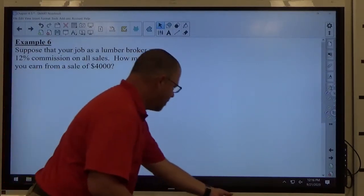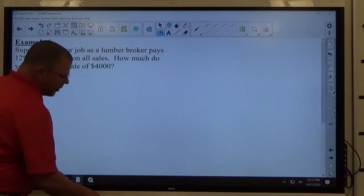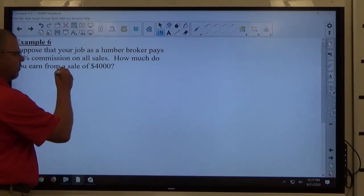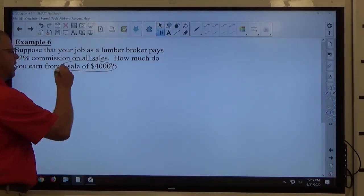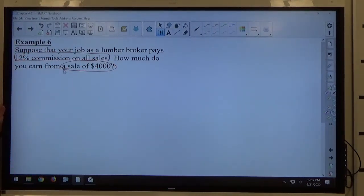So, once again, a commission has to do with you earning a portion of the amount that you sold. So if I got this job and I sell $4,000 worth of stuff and I get a 12% commission on all sales, my money is the 12% of the total amount of money I sold, $4,000.